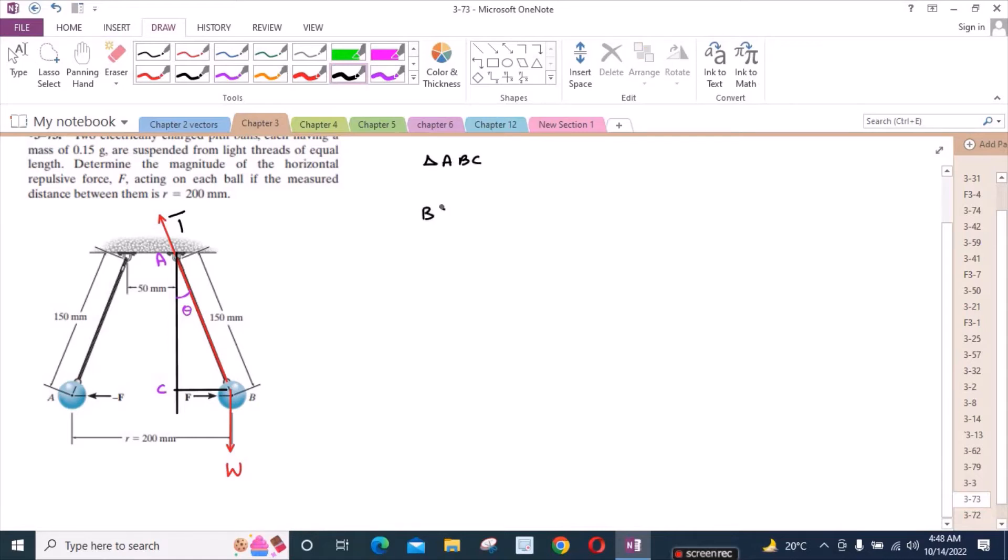For the length BC, we have 200 minus 50 divided by 2, which is equal to 75 millimeters.